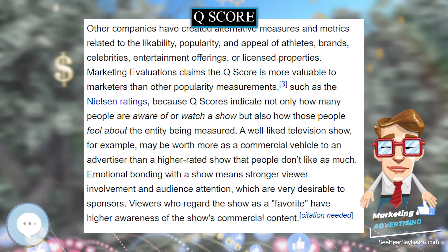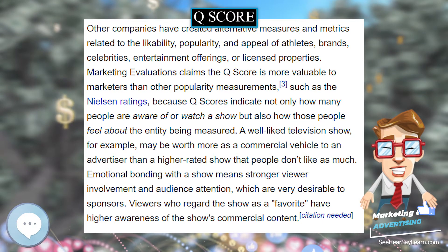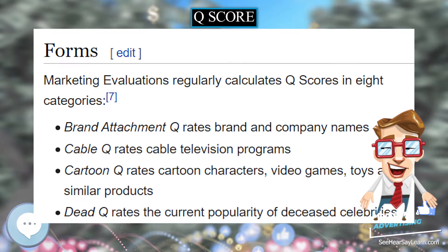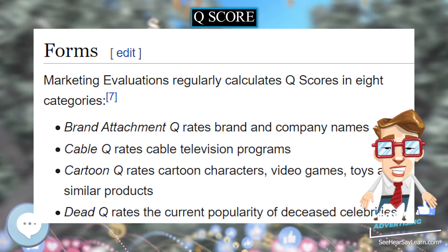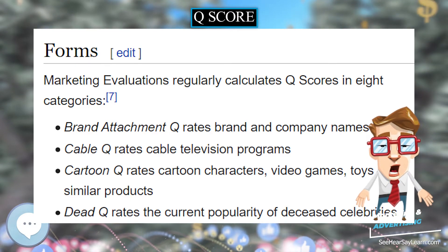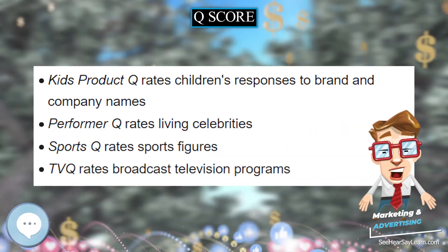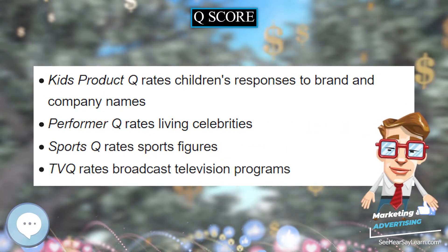Q-scores are calculated for the population as a whole as well as by demographic groups such as age, education level, gender, income, or marital status.